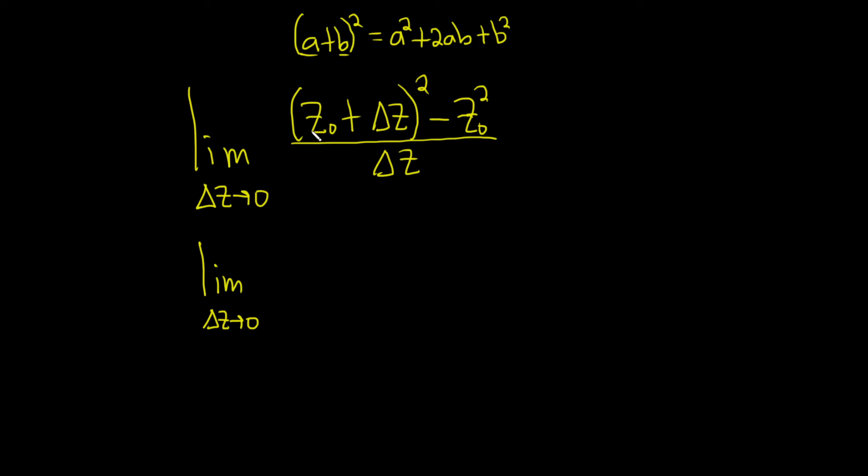and then you square the last term. So here we'll square the first term, so we'll get z0 squared, plus, and then we'll multiply these two and double them. So 2z0 delta z, and then we'll square the last one, so we have delta z, and that whole thing is squared.